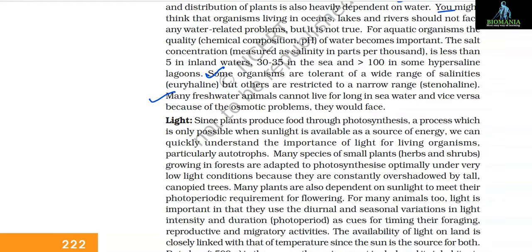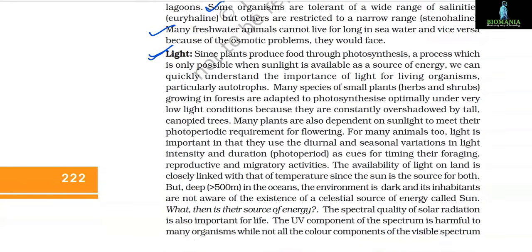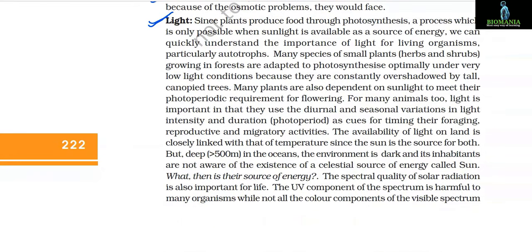Light is the third major abiotic factor. Since plants produce food through photosynthesis, a process only possible when sunlight is available as a source of energy, we can quickly understand the importance of light for living organisms, particularly autotrophs. Many species of small plants — herbs and shrubs — growing in forests are adapted to photosynthesize optimally under very low light conditions because they are constantly overshadowed by tall canopy trees. Many plants are also dependent on sunlight to meet their photoperiodic requirement for flowering.